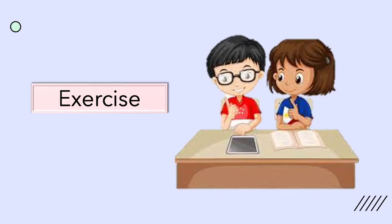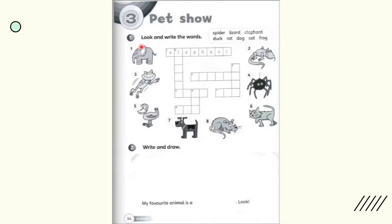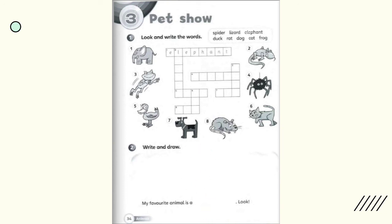Next, let's complete some tasks. 1 — Look and write the words. You can choose the words from here and write in the box provided. For example: 1. Elephant. 2 — Write and draw. My favourite animal is a ___. You can choose the animals from here, choose one, draw here, and write the animal here.